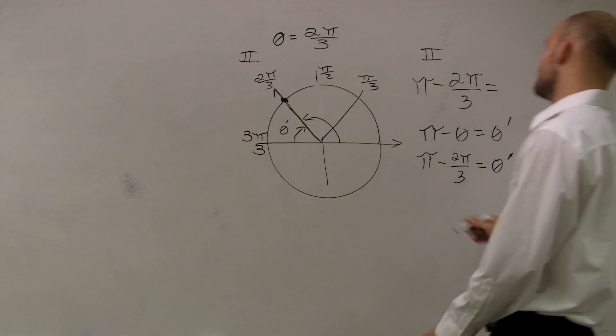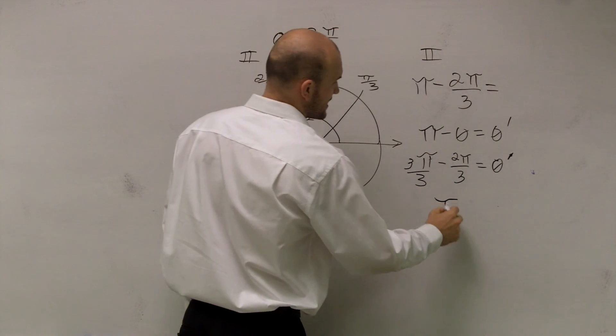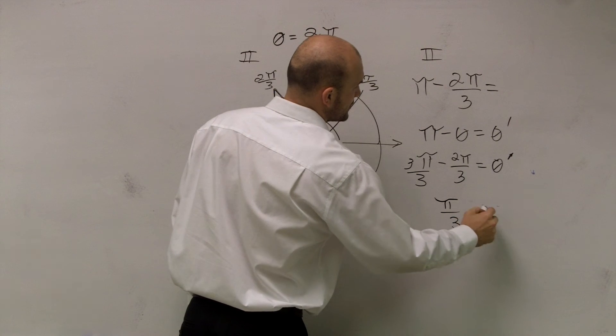Here, we need to get them to be the same denominator. So I multiply it by 3 over 3. What you guys notice is I get π over 3 equals θ prime.